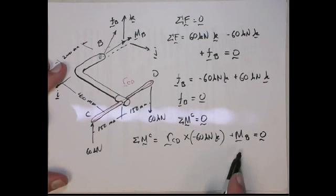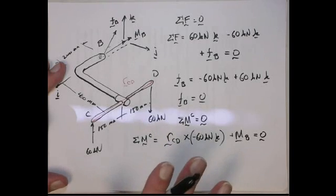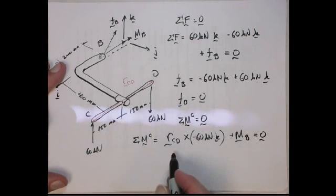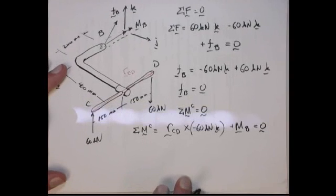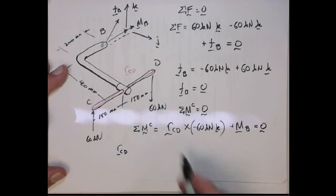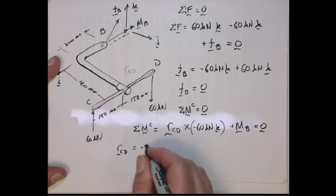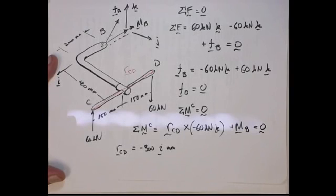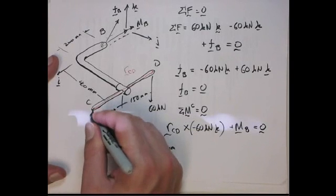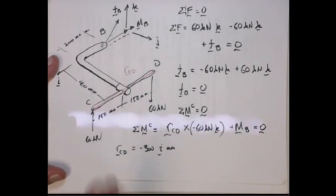The only thing you have to get used to is being able to express the moment arm as a vector and then to perform the cross product. And they're relatively easy. So RCD is a straight line vector in the minus I direction, and the magnitude of it is 300. So it's minus 300 millimeters in the I direction. You have to make sure you be careful. It's from point C to point D. It's from the point where you're taking the moments about to the point where the force is being applied.